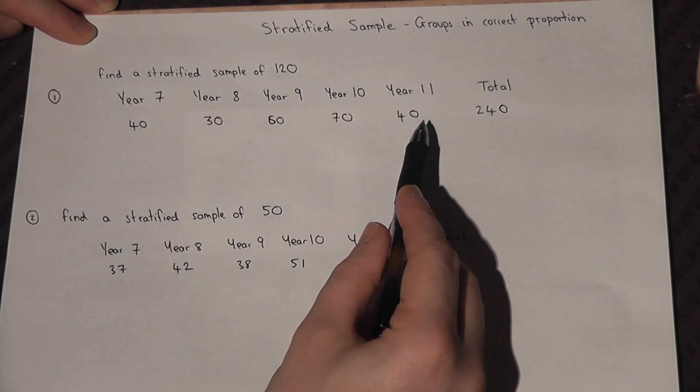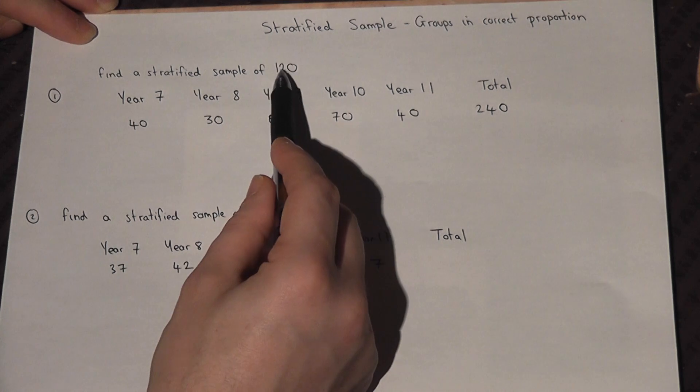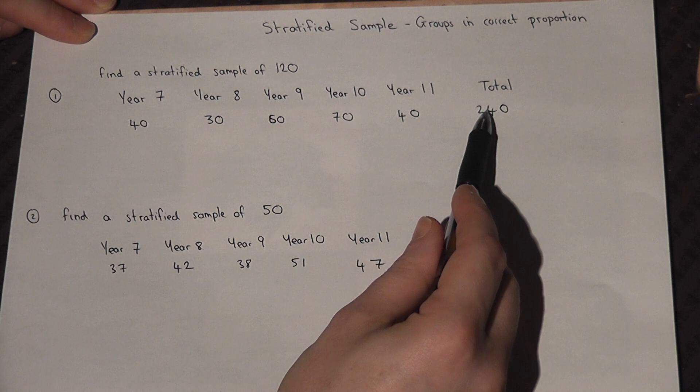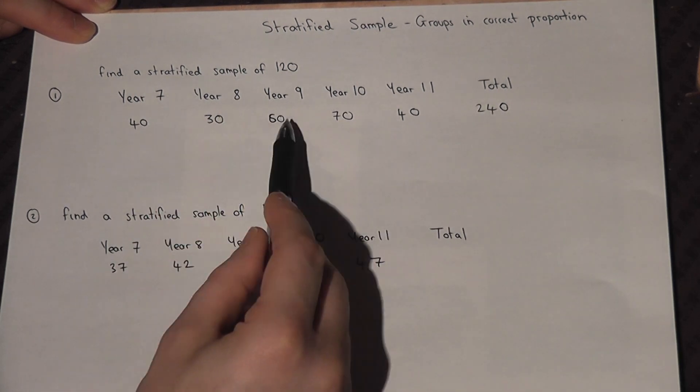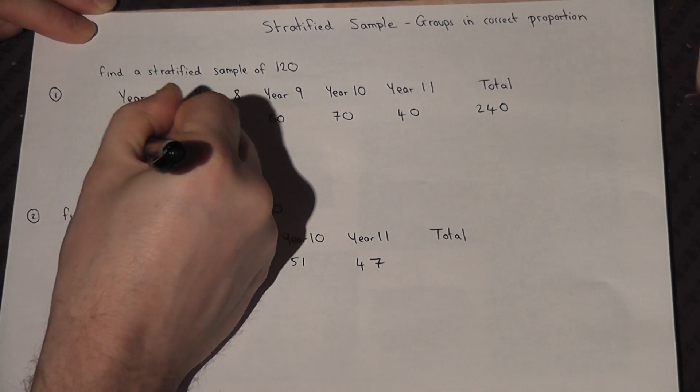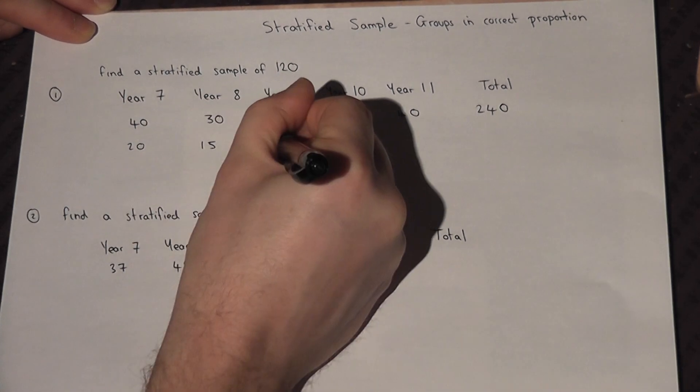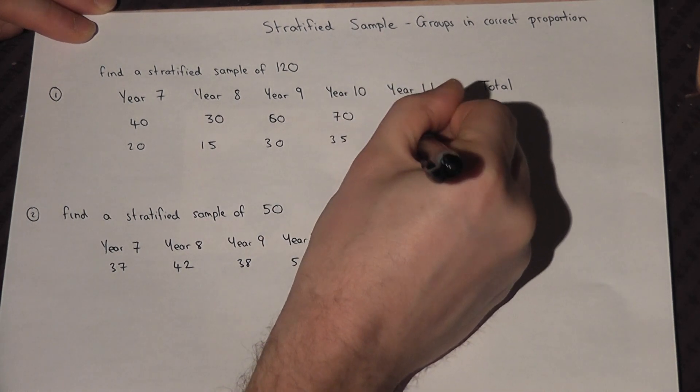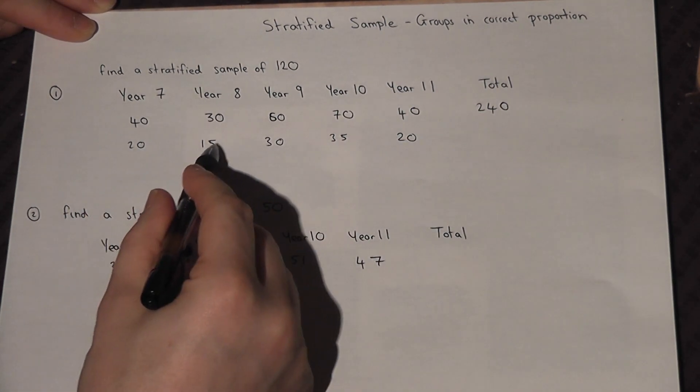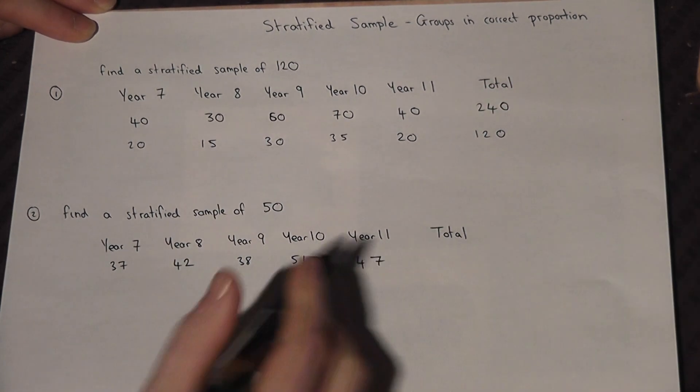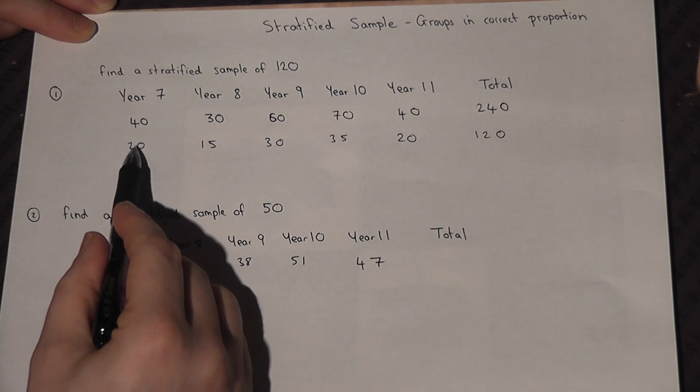Now if we observe in this simple case, 120 is half of 240. So if I just halve each of the year groups - 20, 15, 30, 35, and 20 - if I check and add them together I get to 120. Then this gives me a stratified sample.